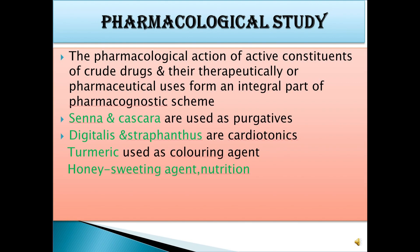Pharmacological studies on the actions of active constituents of crude drugs and their therapeutic or pharmaceutical uses form an integral part of the pharmacognostic scheme. Senna and cascara are used for treatment as laxatives and purgatives — purgative being the treatment of constipation. Digitalis and strophanthus are used to treat heart disease, producing a cardiotonic effect. Turmeric, Curcuma longa, is used as a colouring agent. Honey is used as a sweetening agent and nutritional supplement.